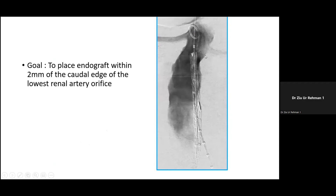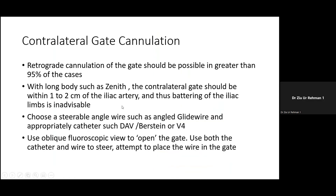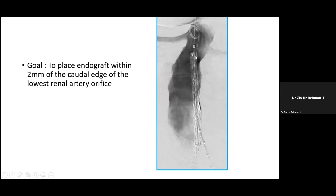The target is to place the main body just below the lowest renal artery, within 2 mm at the caudal end. For example, with the Zenith graft, start about one centimeter above and gently open it up. Once positioned just below the renal artery, continue opening it until the contralateral gate is accessible.